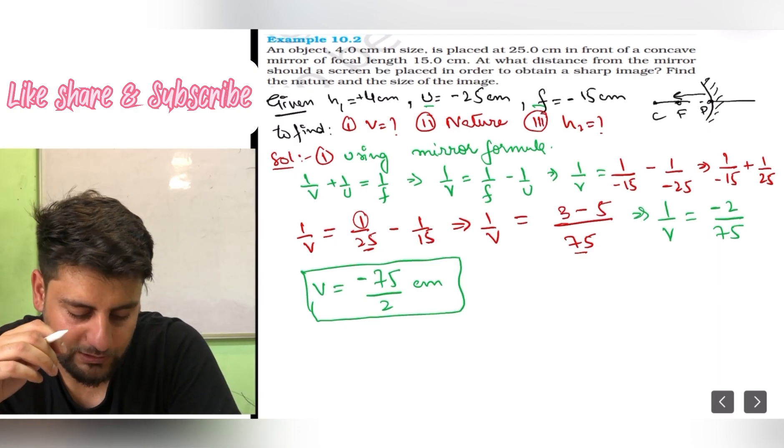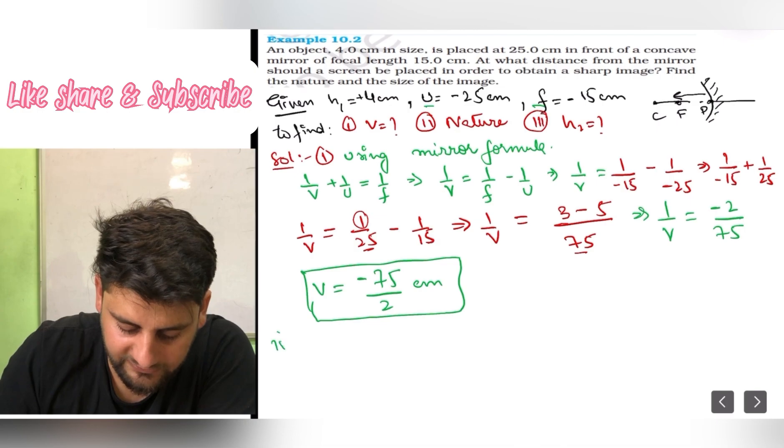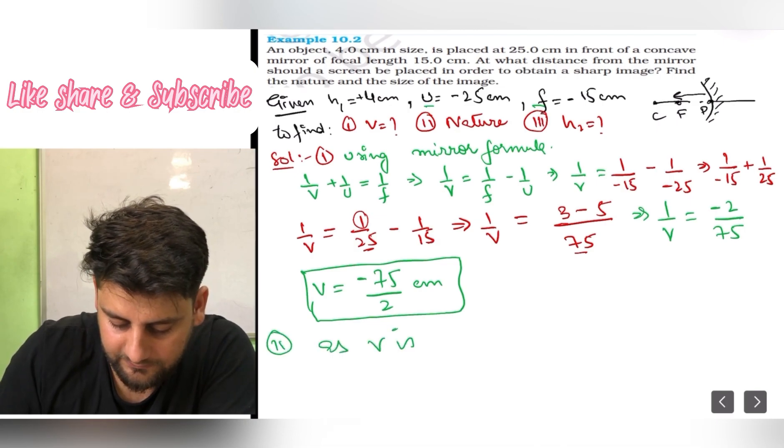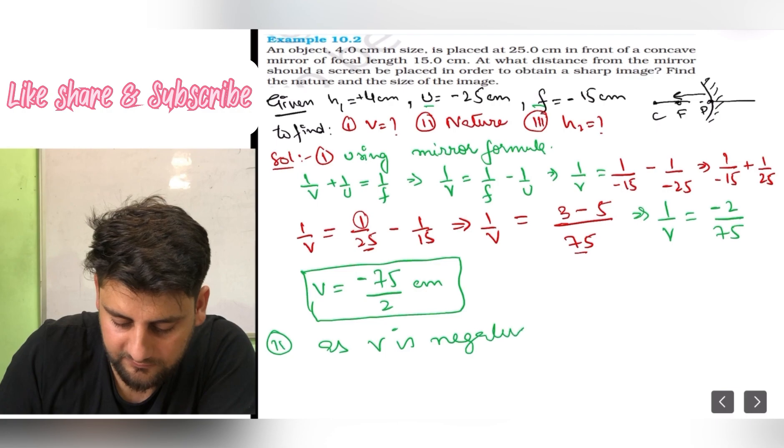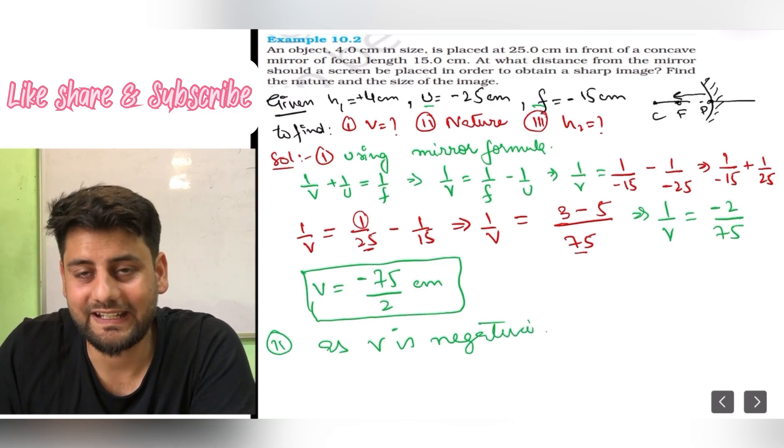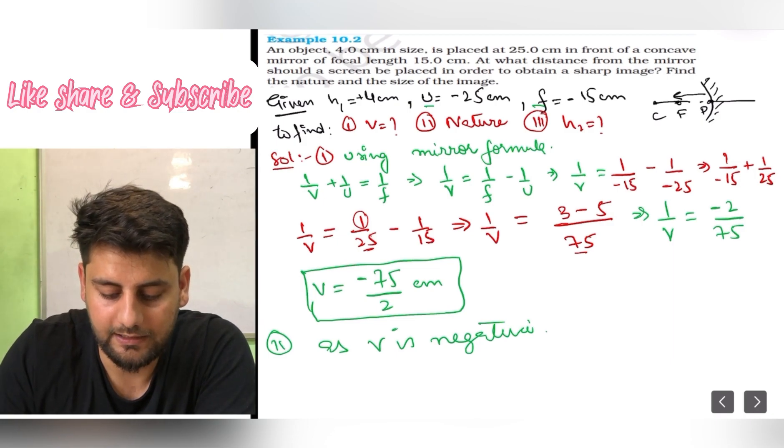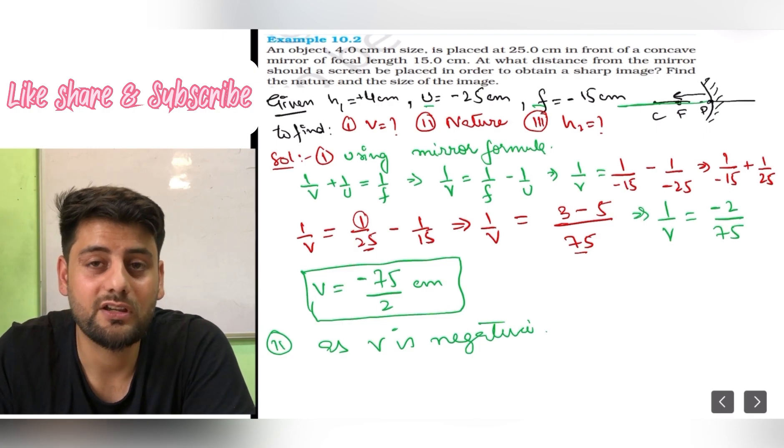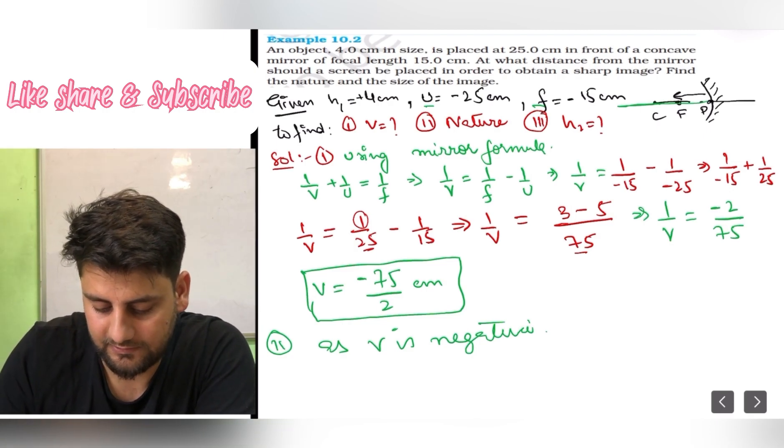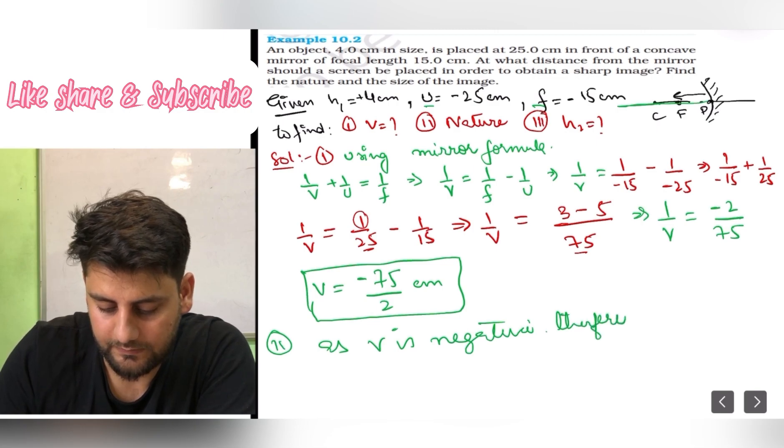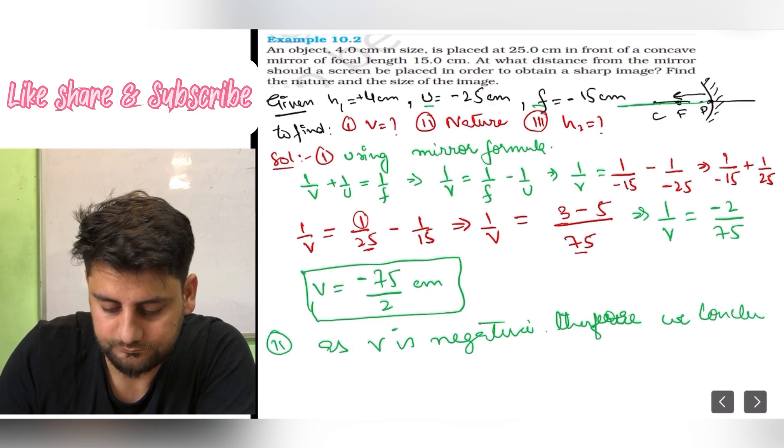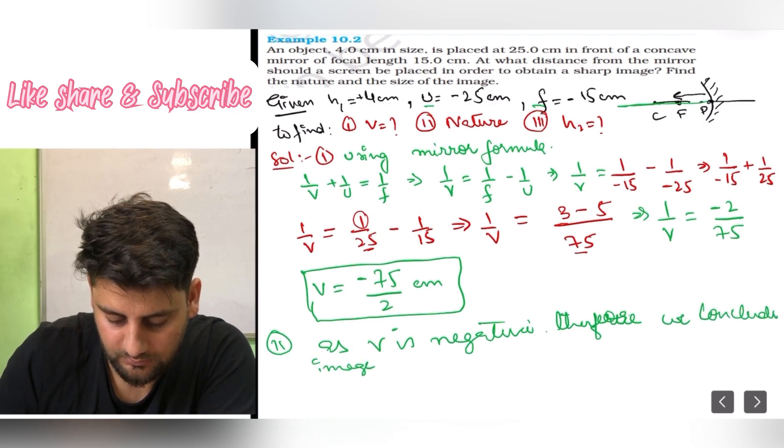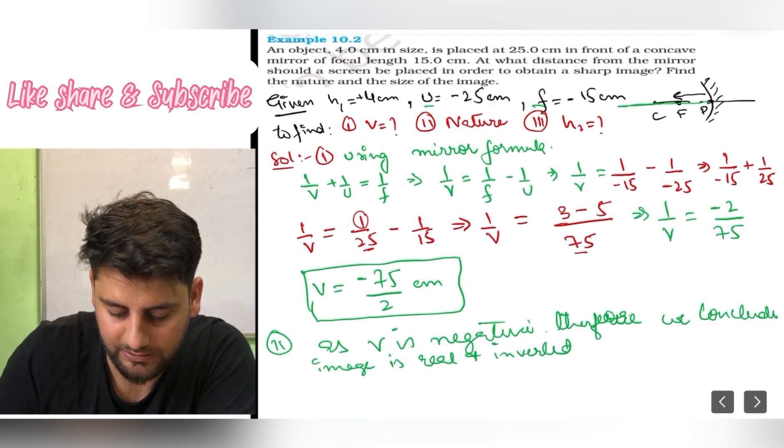Now second thing we have to find is nature. So from v, as v is negative, since v is negative, what does this mean? V negative means that image will lie on negative x-axis. Negative x-axis pe image ban rahi hai. So this means image is real and inverted. So I will write as v is negative, therefore we conclude image is real and inverted. I hope you understand how I am concluding this.